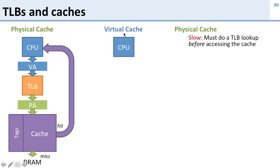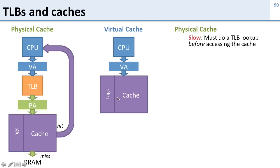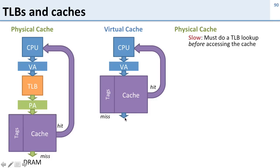The other way to do this is a virtual cache. We take our CPU, which outputs a virtual address, and connect that directly to our cache. The cache looks up data based on the virtual address. If we have a hit, we return it to the CPU. If we miss, we go to DRAM — and since DRAM uses physical addresses, on a miss we go to the TLB, translate to a physical address, and then go to DRAM.